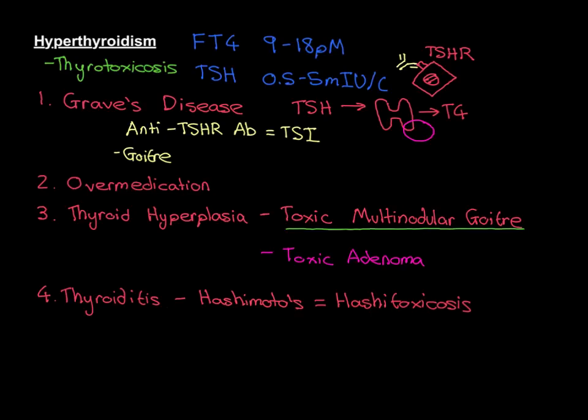Thyroiditis is also a cause of hyperthyroidism. So those are the four causes of hyperthyroidism — five really, because we've got two different forms of thyroid hyperplasia. We'll have a break here, and in the next video we'll talk about the symptoms of hyperthyroidism and the treatment for hyperthyroidism.